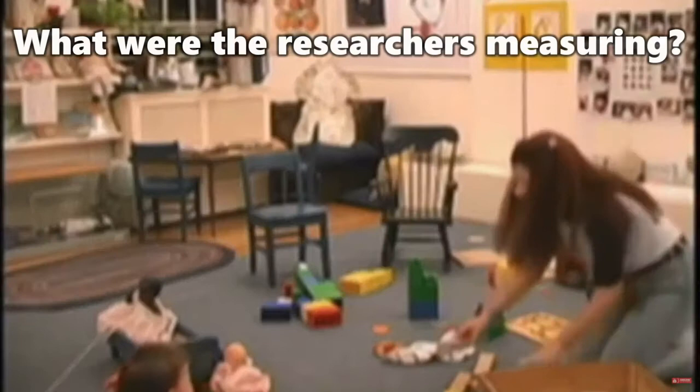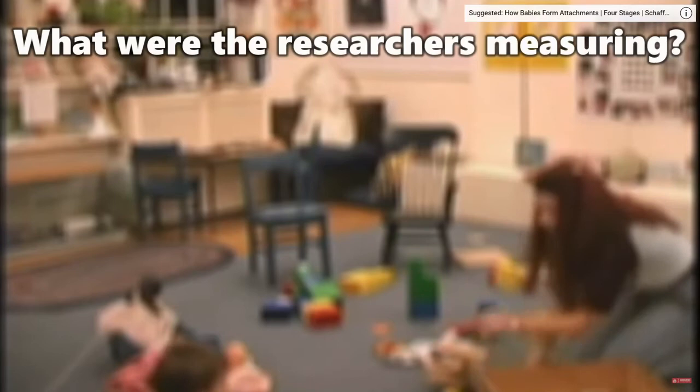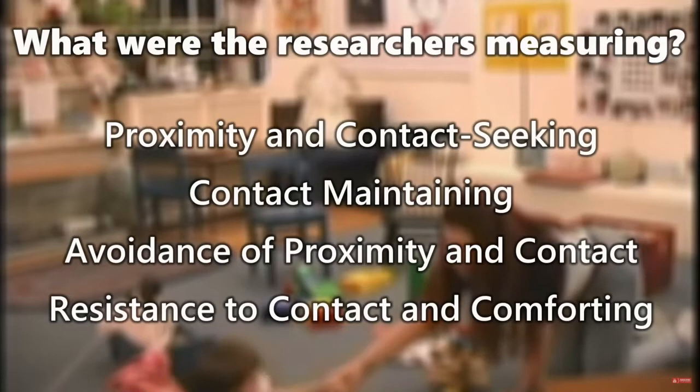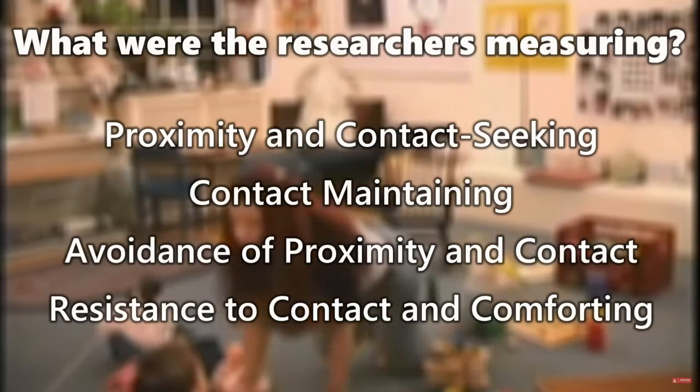Researchers scored the infant's behavior on four measures: proximity and contact seeking, contact maintaining, avoidance of proximity and contact, and resistance to contact and comforting. The baby's exploratory behaviors were also recorded as she explored the environment.